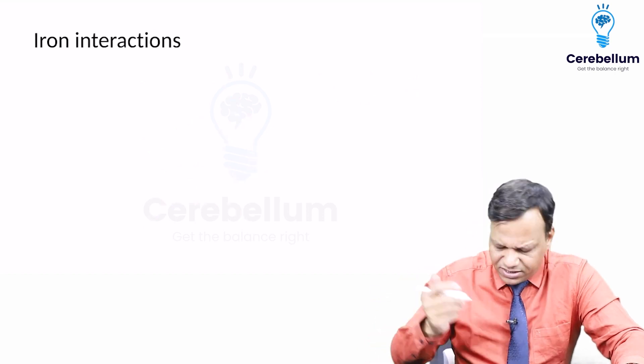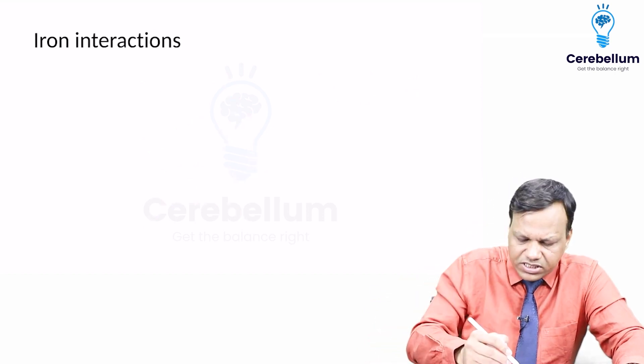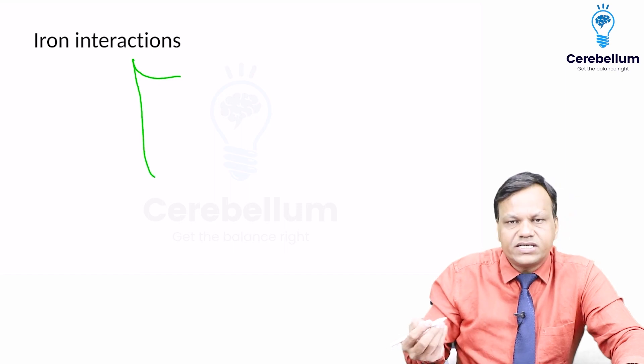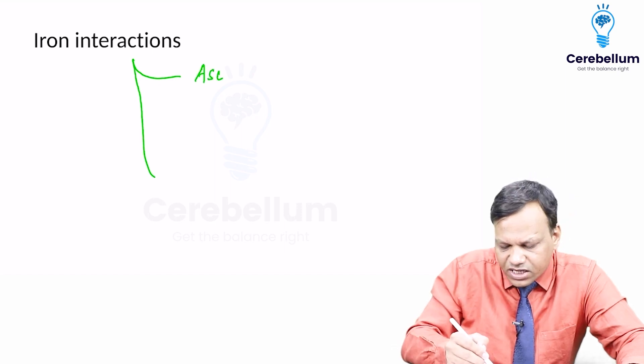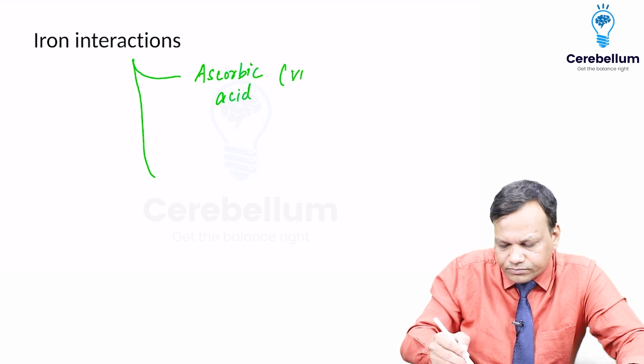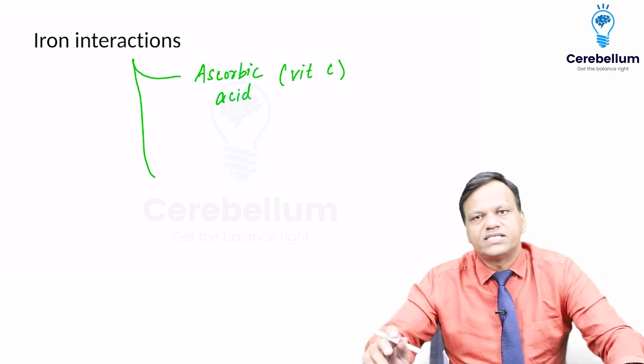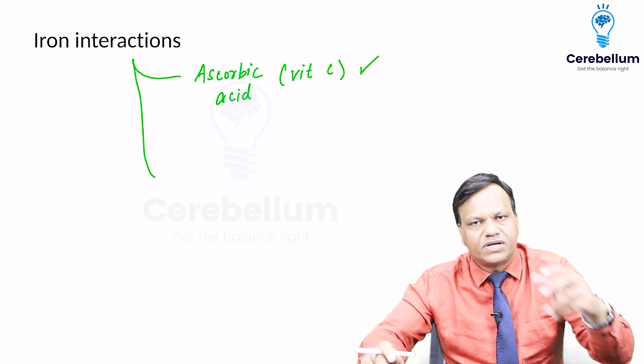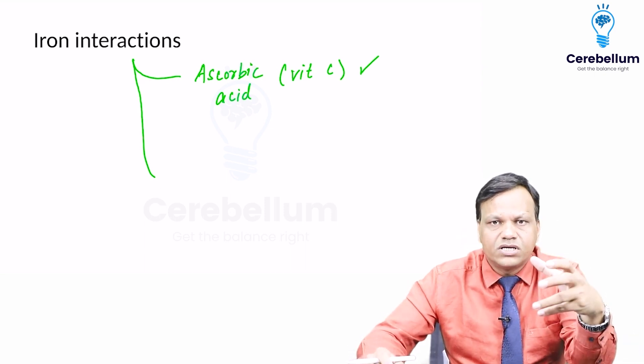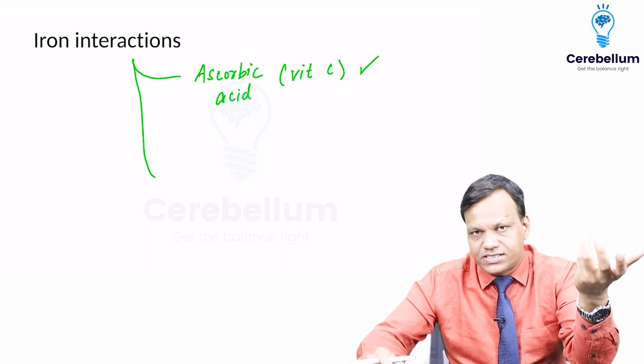Next is interaction of iron. These are easy - one positive, one negative. Iron is always given with ascorbic acid or vitamin C. We always advise that iron should be taken with vitamin C or citrus fruits because the absorption increases.